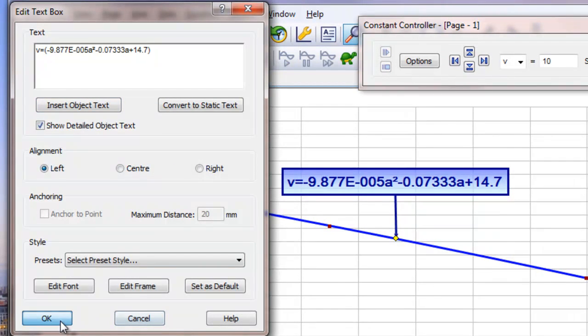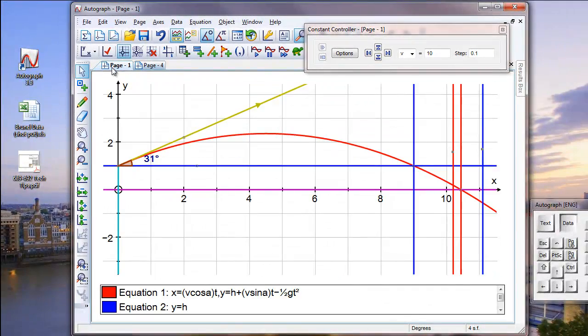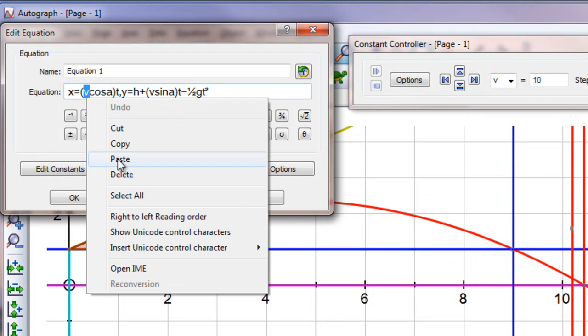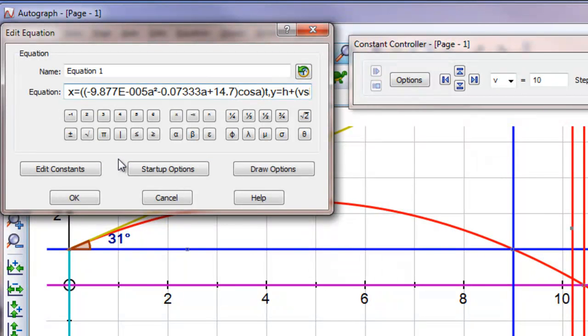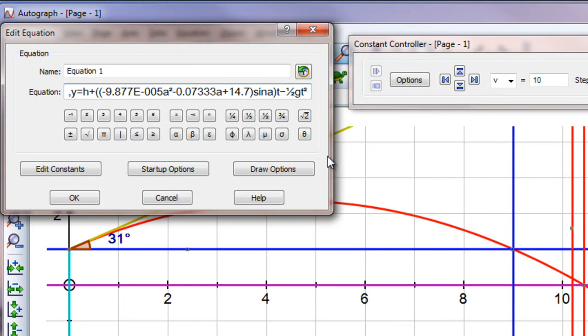So if we now go back to the other page, we can have a look at the original equation, the parametric equation, and substitute for v this expression for a. So that the velocity, which is now a function of the angle, can be substituted there. And so we get a very long parametric equation now that is dependent only on angle, not on velocity.